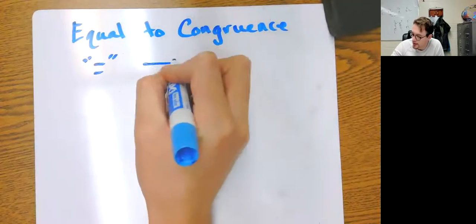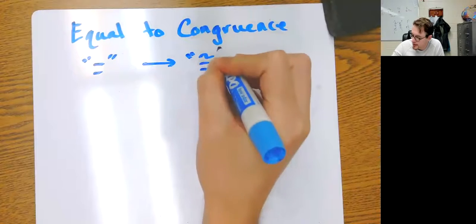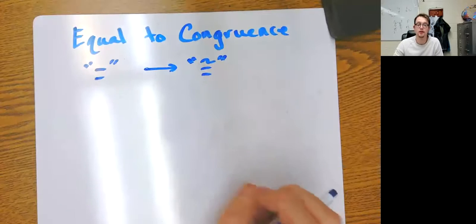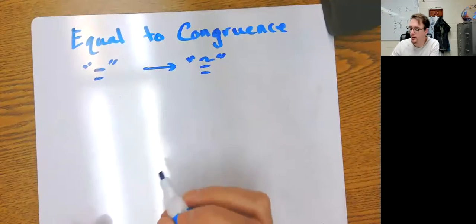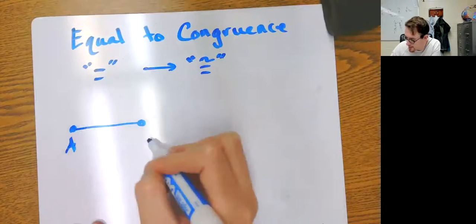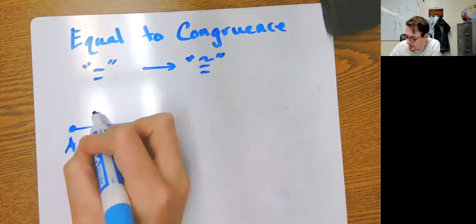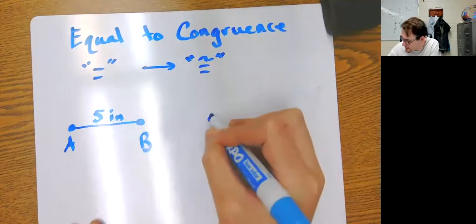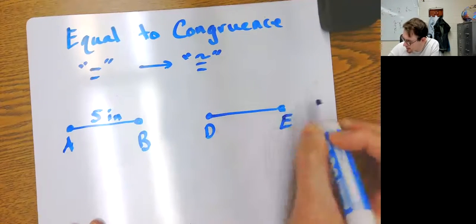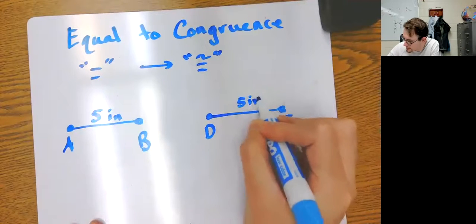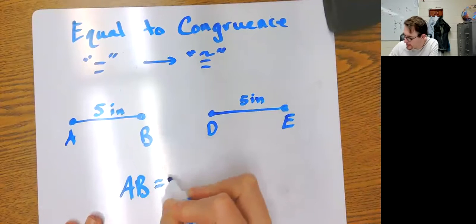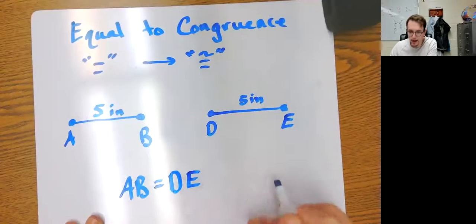This is the equal sign and we're going to go to a congruent symbol. This is the symbol for congruence - an equal sign with a little tilde up top. What it means is, if I know that this is AB and this is five inches, and this is DE and this is also five inches.